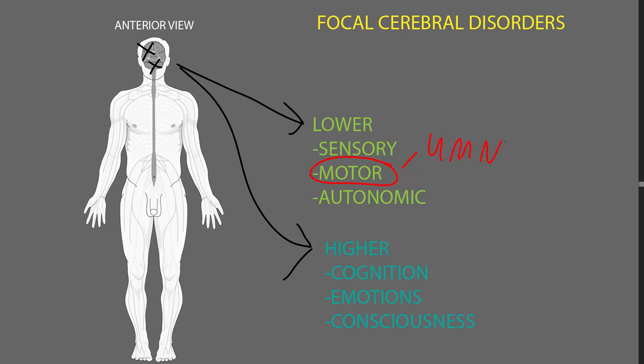Let me just write UMN for upper motor neuron, because most of these lesions will affect upper motor neuron axons as they're passing through the tissue on their way to someplace else, like the spinal cord.